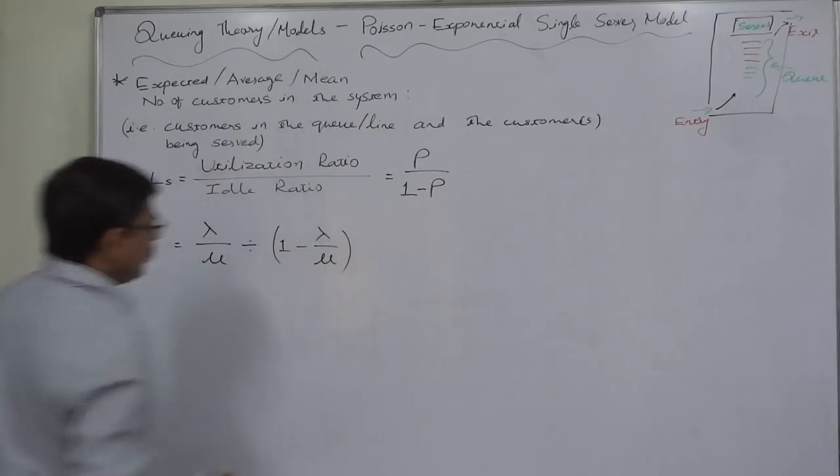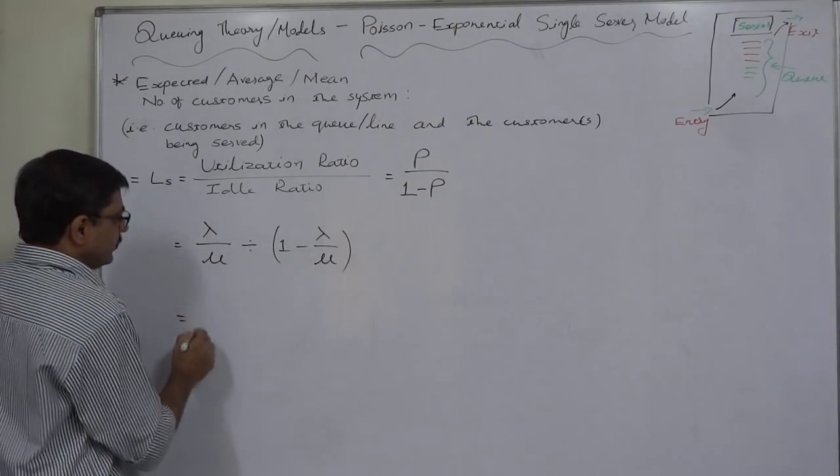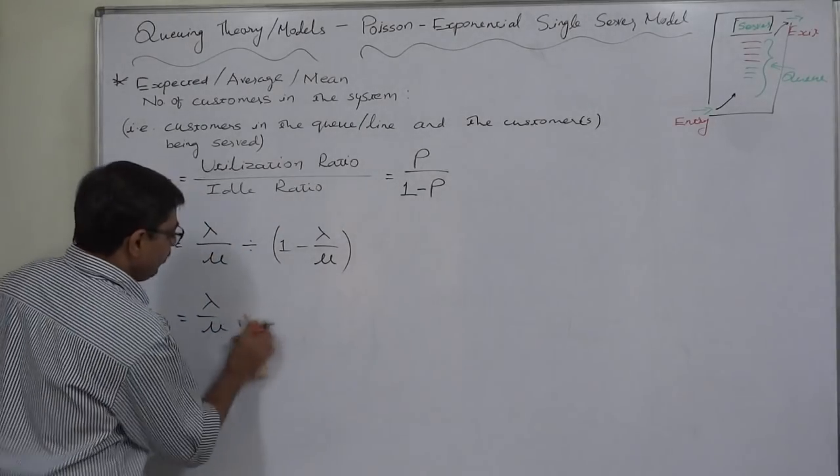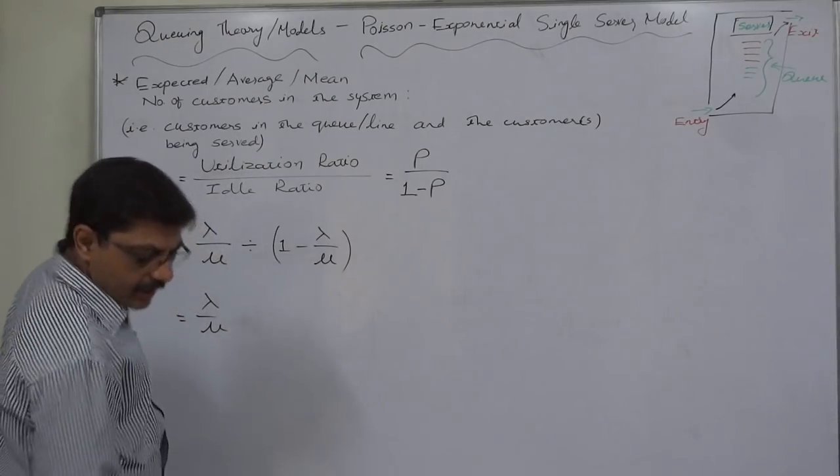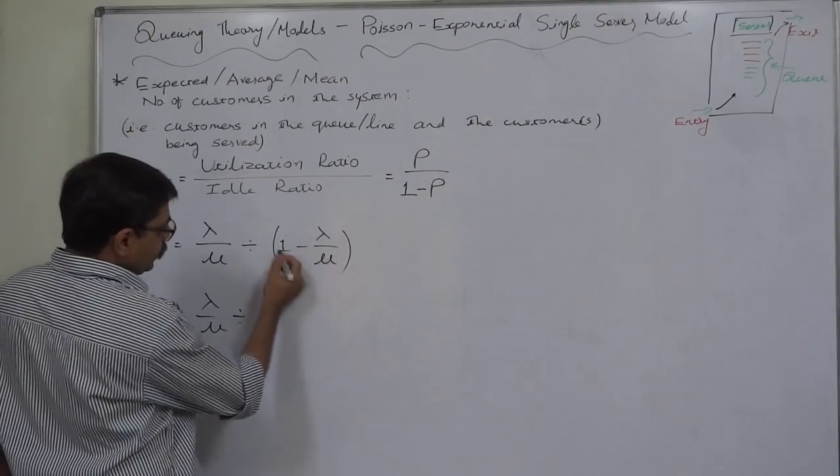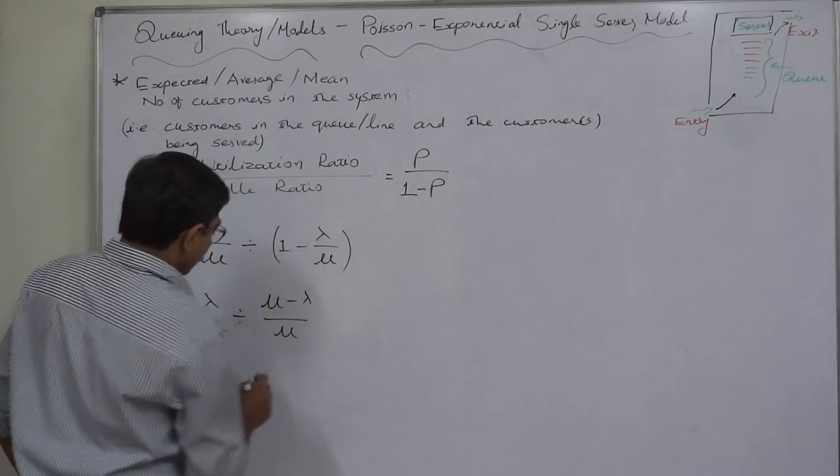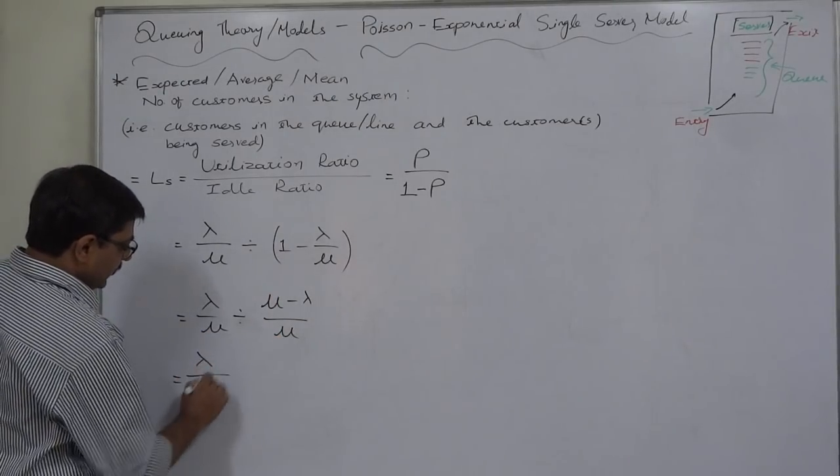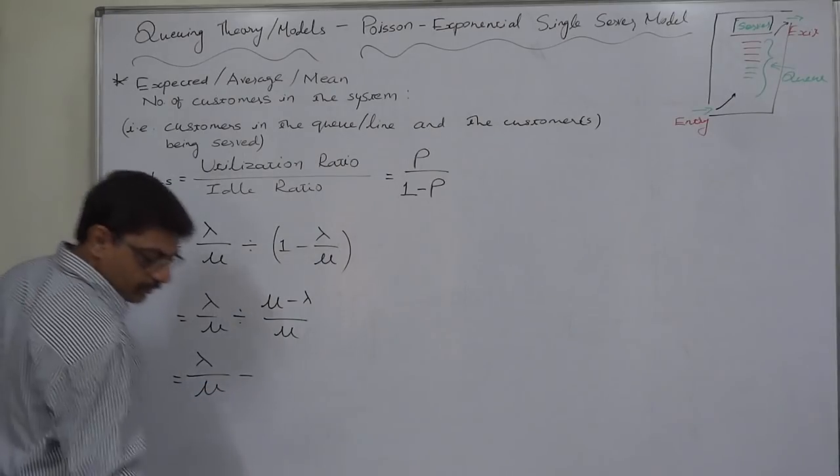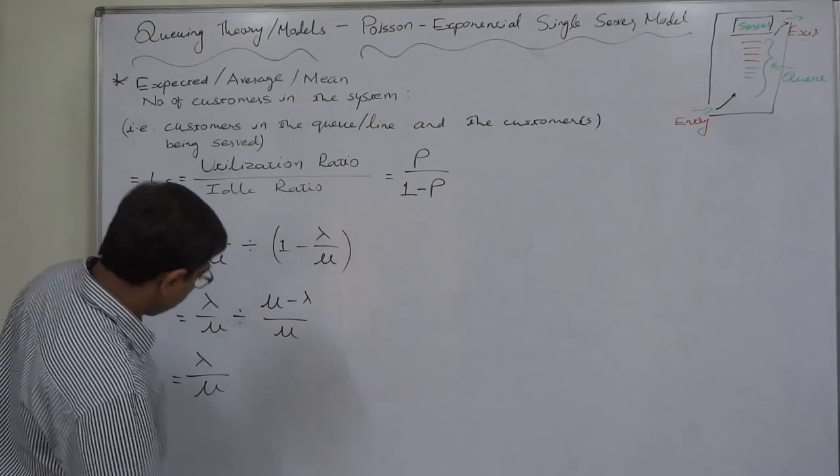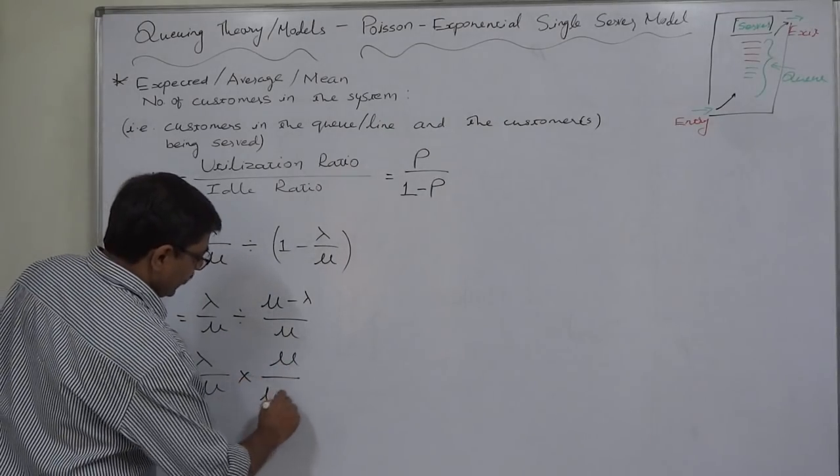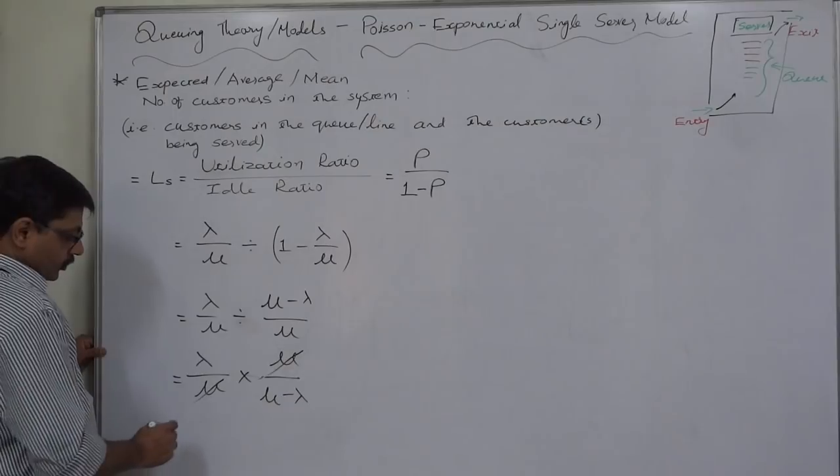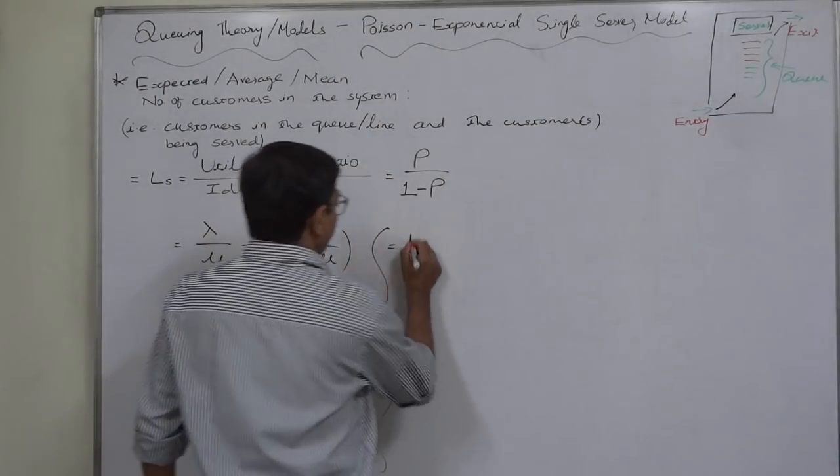Again let us simplify it. Lambda upon mu divided by what is the simplification of 1 minus lambda upon mu? Lambda into 1 and mu into 1 - mu minus lambda upon mu. Since this is division, we have to multiply it by its inverse, so it will be lambda upon mu multiplied by mu upon mu minus lambda.